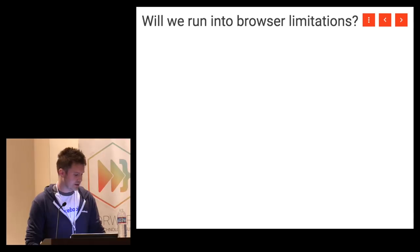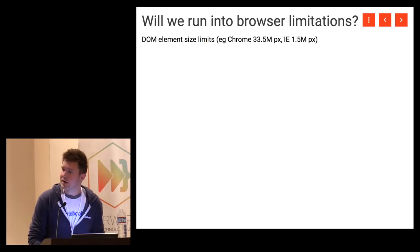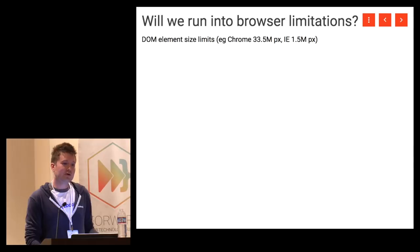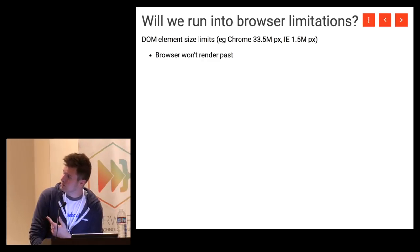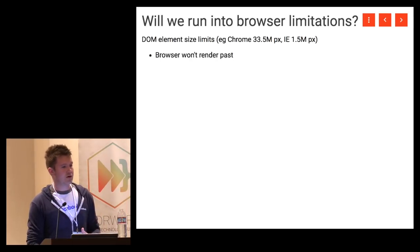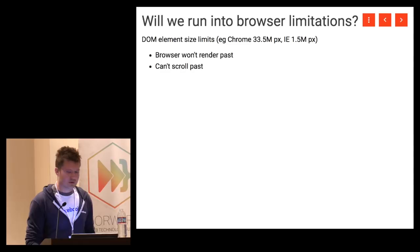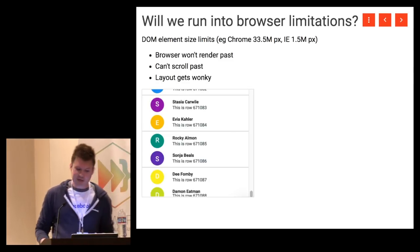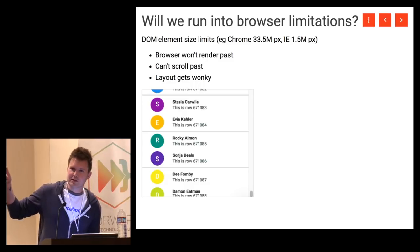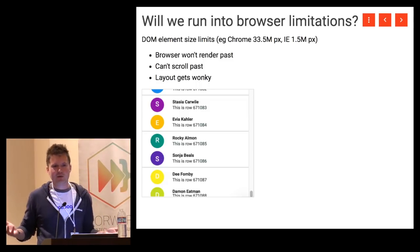Another interesting challenge is browser limitations. Different browsers have limits to how big they'll allow DOM elements to be. Browsers weren't really intended to handle hundreds of thousands or millions of rows, but with windowing we can handle that data and we run up against these limits. In Chrome the limit is pretty high, but in Internet Explorer and unfortunately in Edge the limit is really tiny — a million and a half pixels. The browser won't render any farther than that, you can't scroll to it with your mouse or JavaScript, and as you approach that limit the layout gets kind of unpredictable. In Chrome, scrolling just stops, probably right in the middle of content.